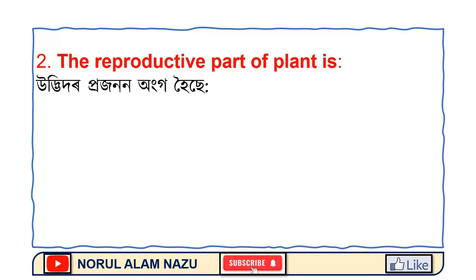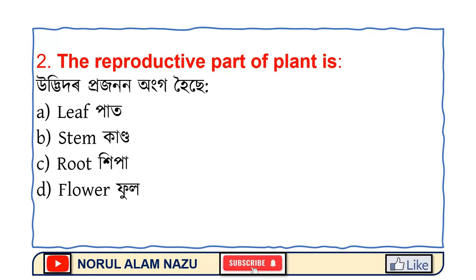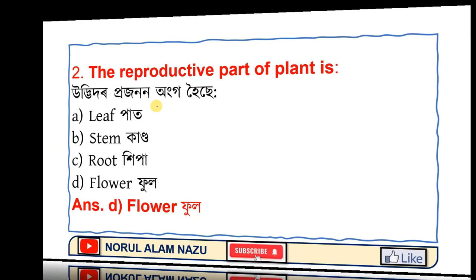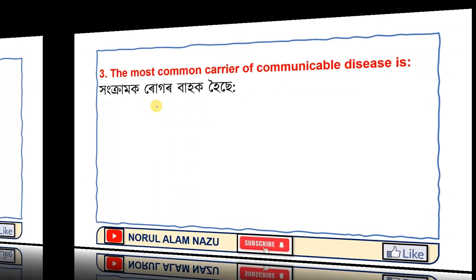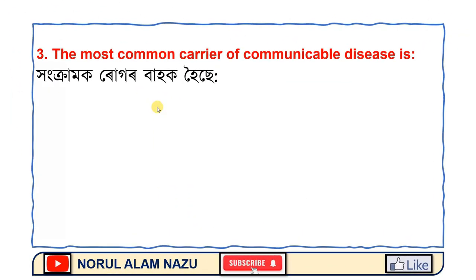The reproductive part of a plant is... The most common carrier of communicable disease is...